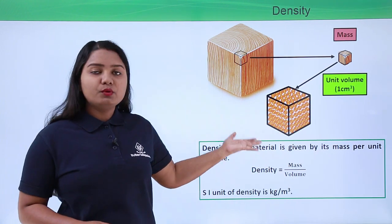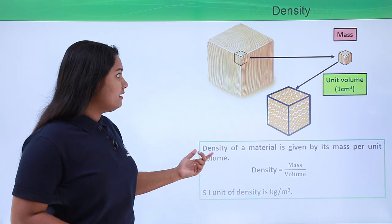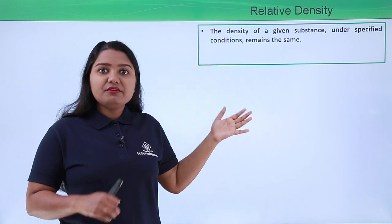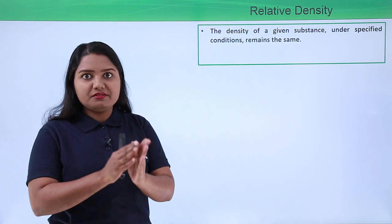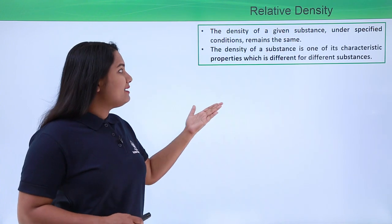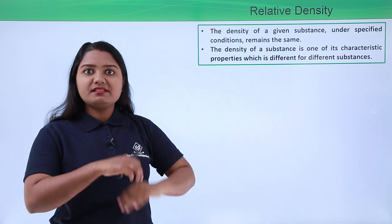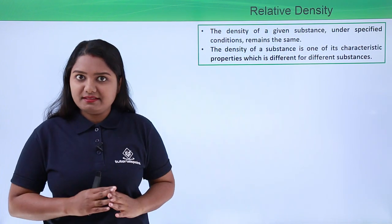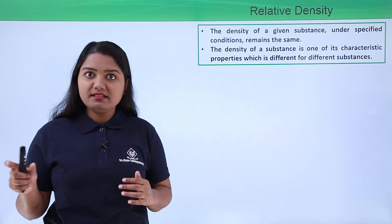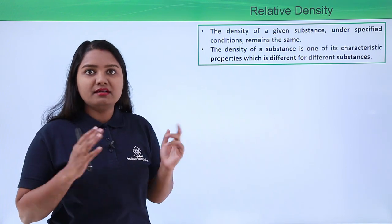Now with this, let us go to the concept of relative density. Density is unique for a particular substance under specified conditions — it doesn't change for a particular substance. This makes it a characteristic property of that substance, which is different for different substances. So the density of a particular substance is not equal to the density of another substance under the same physical and chemical conditions.